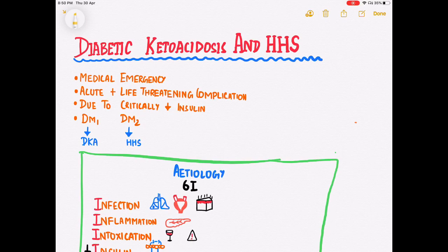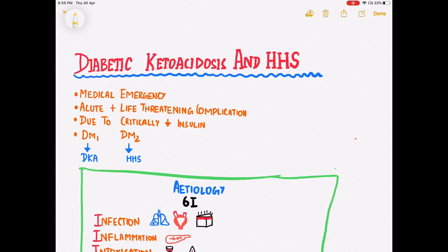Hello guys, welcome back to our channel Guide in Silky. Today we shall be discussing a clinically relevant topic of diabetic ketoacidosis and hyperglycemic hyperosmolar state, denoted here as HHS. Both diabetic ketoacidosis and HHS must be considered as a case of medical emergency. They are acute and life-threatening complications of diabetes that occur due to critically low levels of insulin in the body.